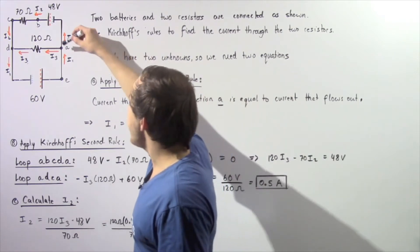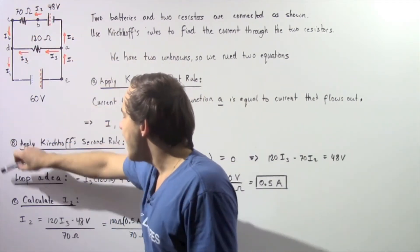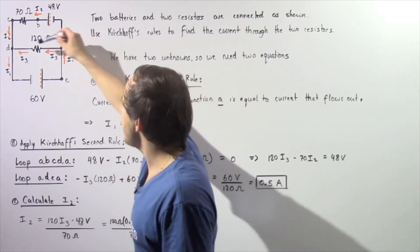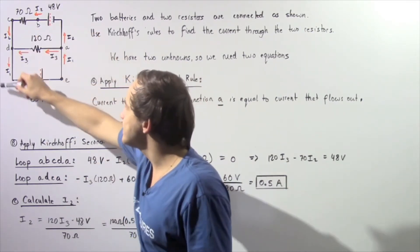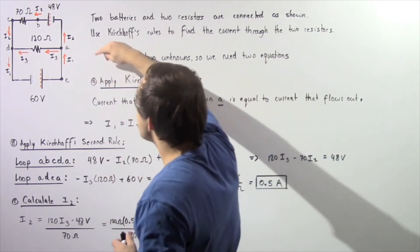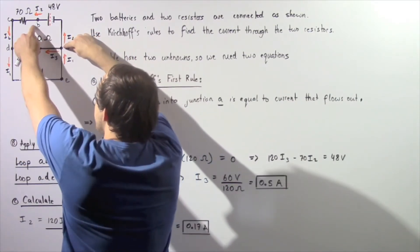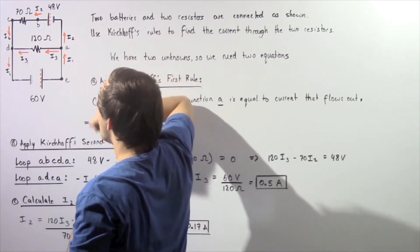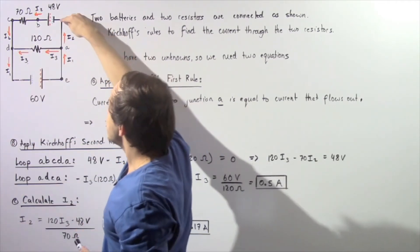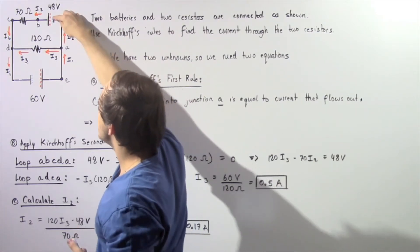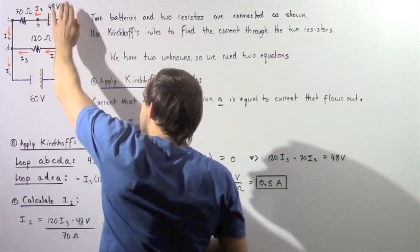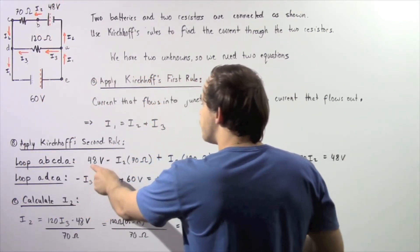Let's choose loop A, B, C, D, back to A as loop 1, and loop A, D, E, A as loop 2. Beginning with loop 1, we move from point A to point B. The electric current I2 flows from A to B, and because we go from the negative to the positive electrode within battery 2, this change is positive — giving us positive 48 volts.